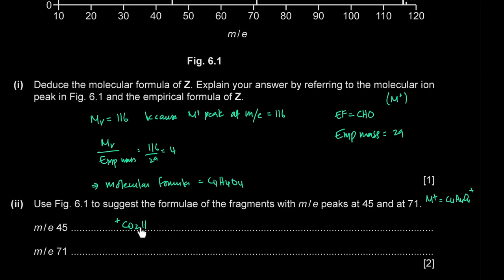Suggest the structure of Z. From the data, Z has a C=C double bond, a carboxyl group, molecular formula C₄H₄O₄, and four oxygens total — suggesting two carboxyl groups. The carboxyl groups are at each end. With two carbons between them and a C=C double bond, the structure is HOOC–CH=CH–COOH (butenedioic acid / maleic or fumaric acid).